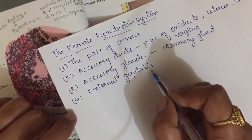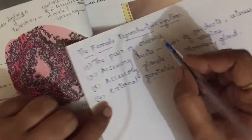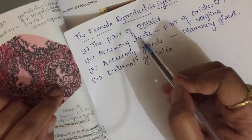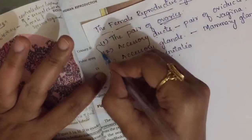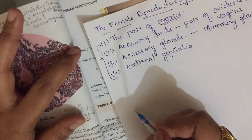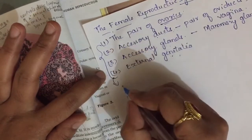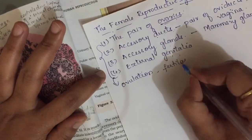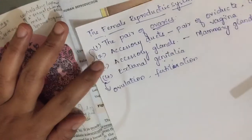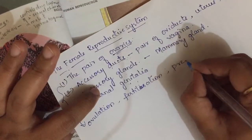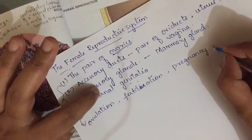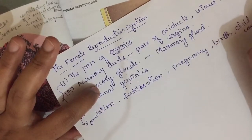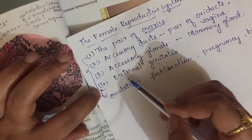All these parts are integrated together and function together. The main functions of the female reproductive system are ovulation, fertilization, pregnancy, birth, and child care.